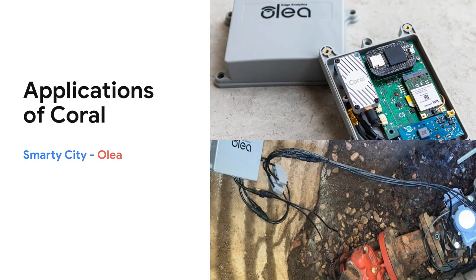Another innovative application of AI at the edge is using machine learning models to analyze water usage in a smart city use case. Olia built a smart sensor for water meters using the Coral USB Accelerator module to run machine learning models right on the device at remote installation locations, providing independent checks for water meter accuracy. This is another great example of deploying AI at the edge without connecting to the cloud.